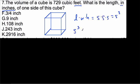In this case, the volume side cubed is 729 cubic feet, or feet to the third power.